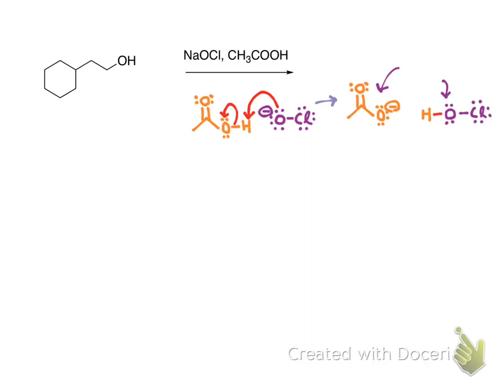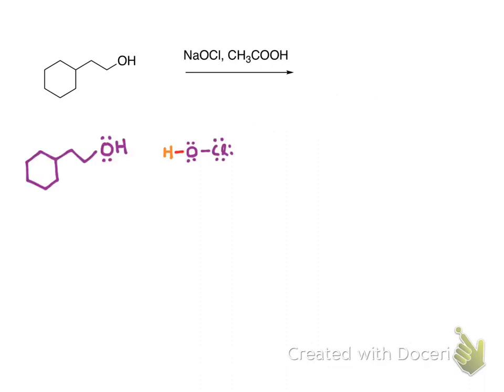Let's pick up where the HOCl actually comes in. The first step is our alcohol reagent is going to participate in a proton transfer reaction, so an acid-base reaction. This is going to happen and we're going to get our first set of intermediates.